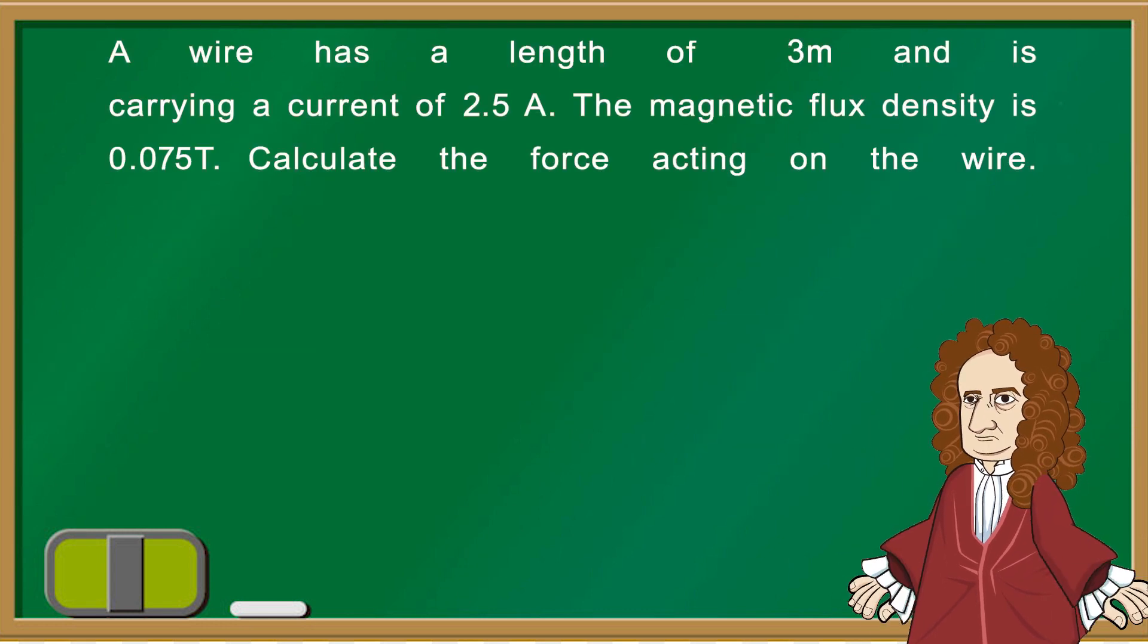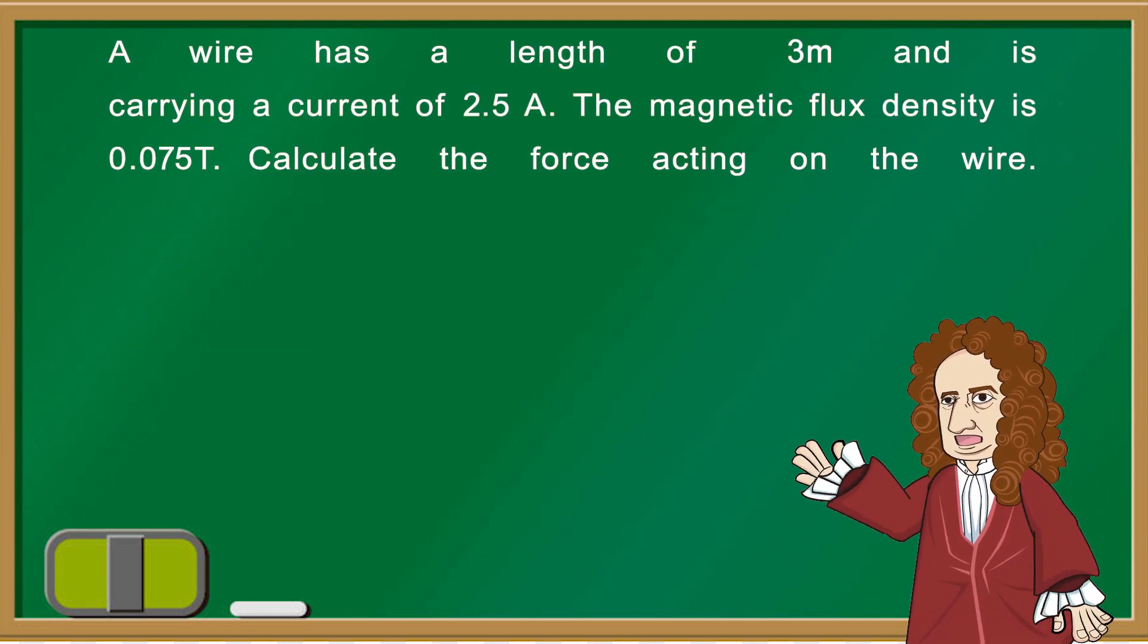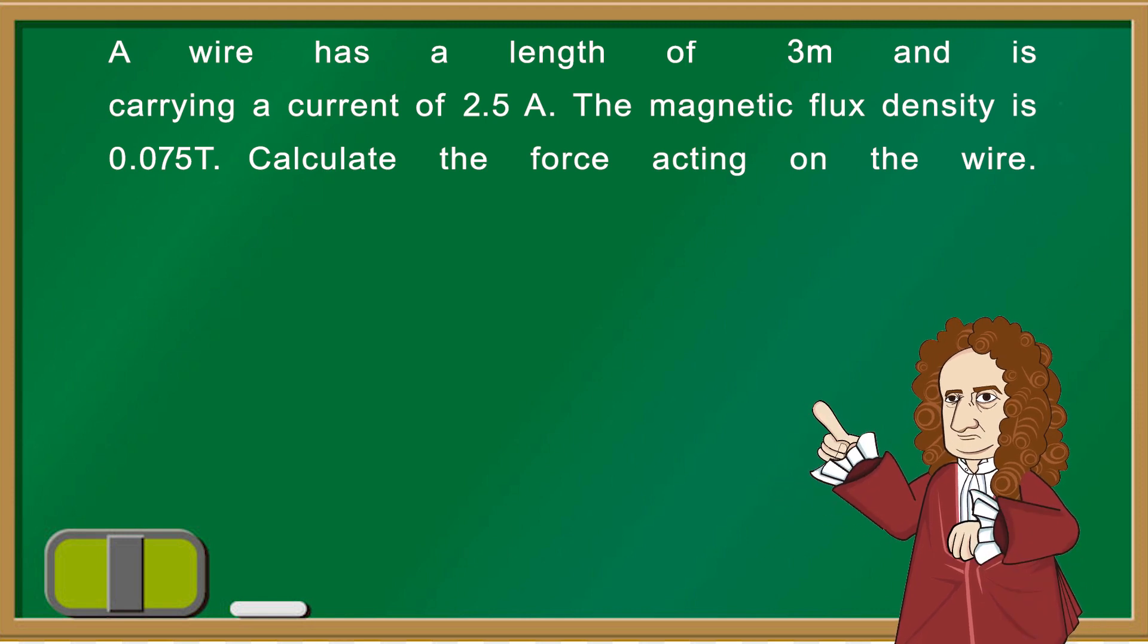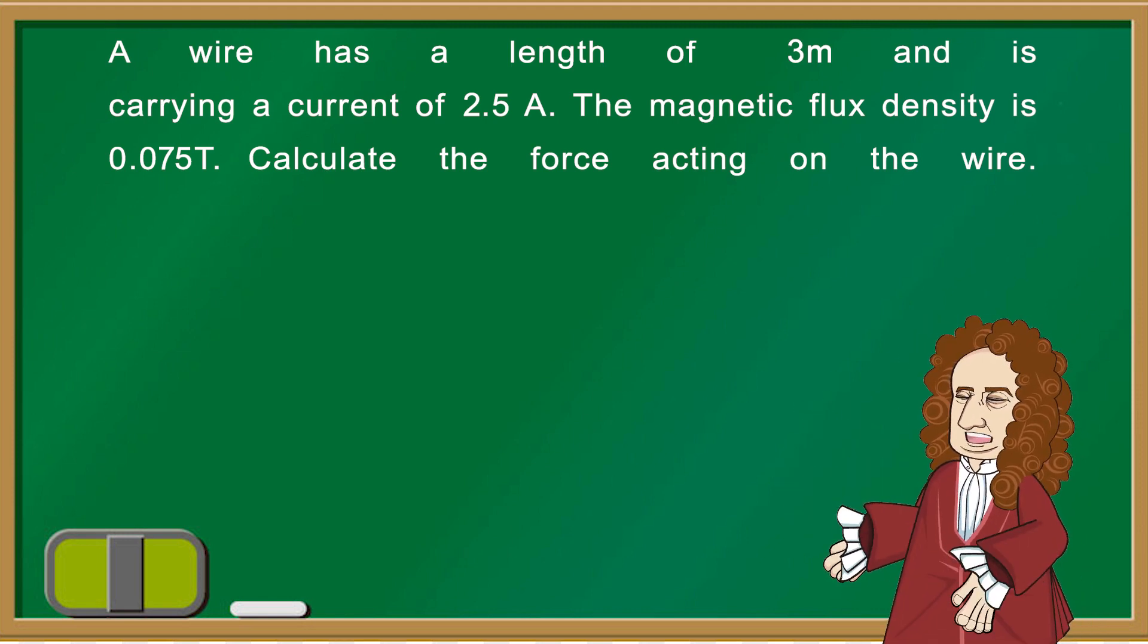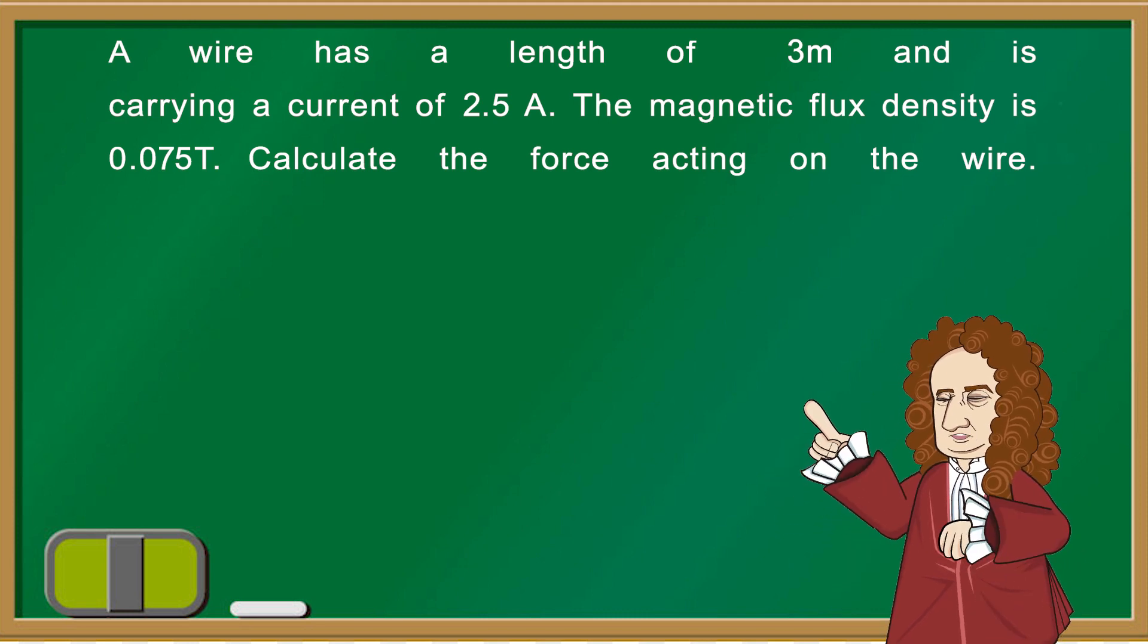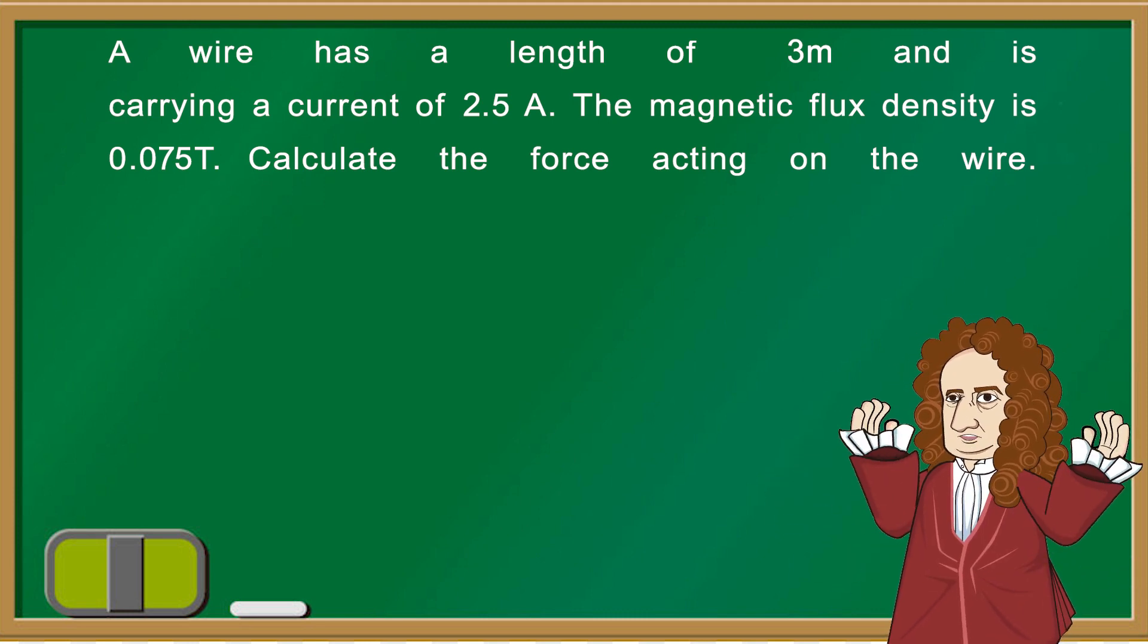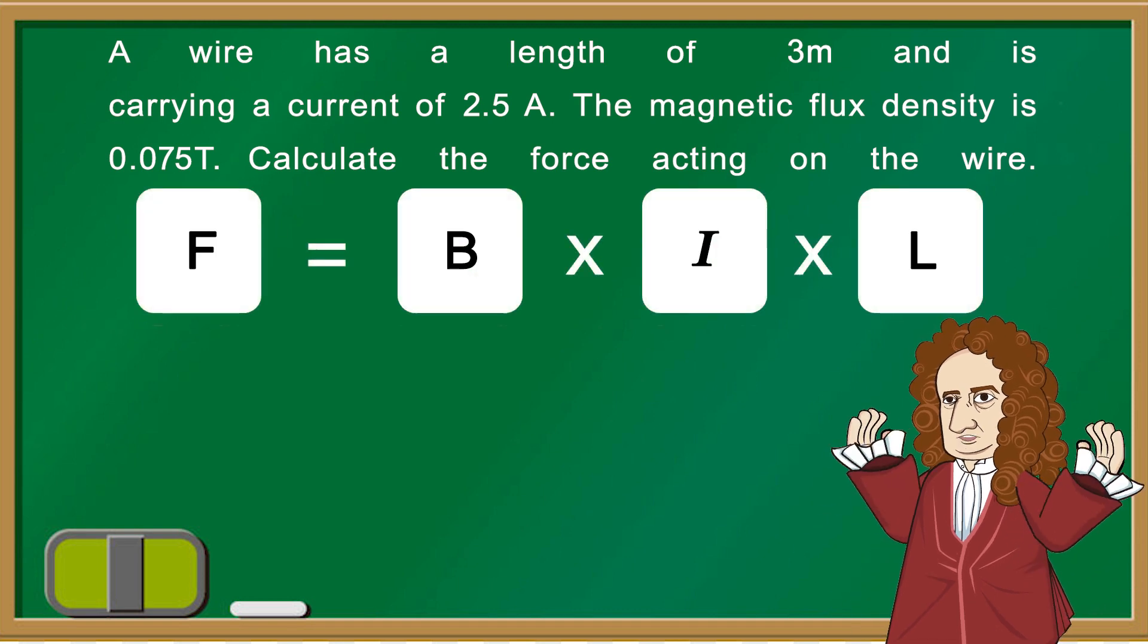Let's solve this example. A wire has a length of 3 meters and is carrying a current of 2.5 Amperes with a magnetic flux density of 0.075 Tesla. So everyone, try to calculate the electromagnetic force which is acting on the wire with the equation that we mentioned.